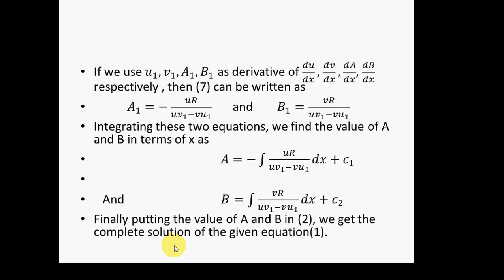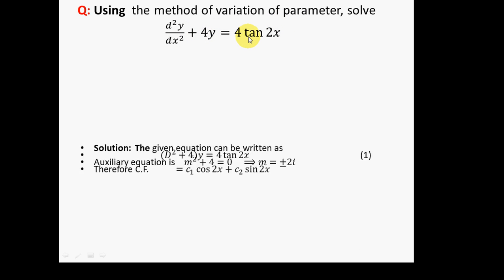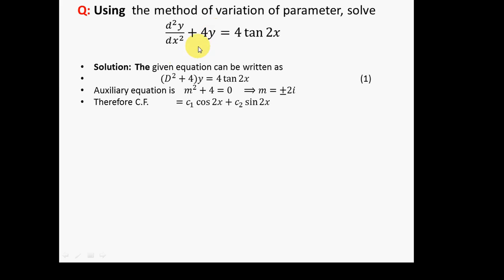Now we discuss an example. Use the method of variation of parameters to solve the equation d²y/dx² + 4y = 4tan(2x). This is a linear differential equation with constant coefficients. We first write it using operator notation as (D² + 4)y = 4tan(2x).